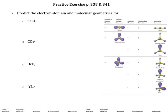Let's get started with the first one: SeCl₂. If you look at the periodic table, Se is in group 6A, which means it brings 6 valence electrons. We've got 2 chlorines, each bringing 7 valence electrons. So that's going to give me a total of 20 valence electrons in this structure.